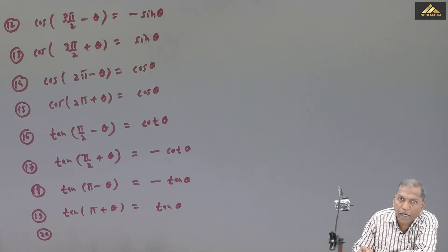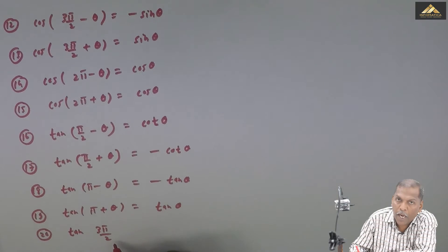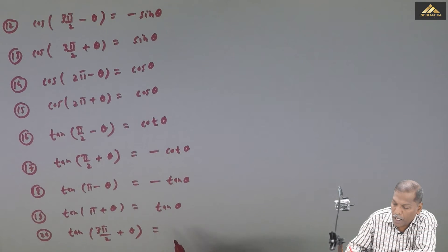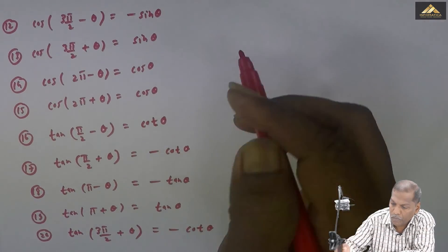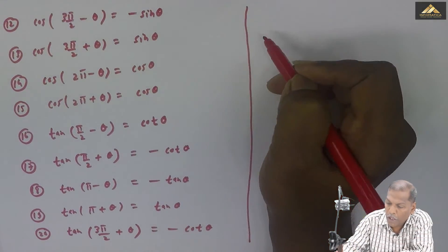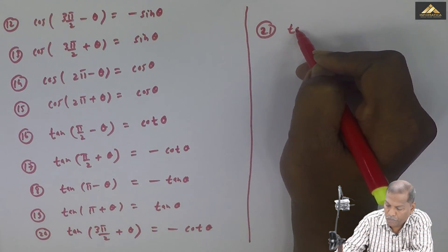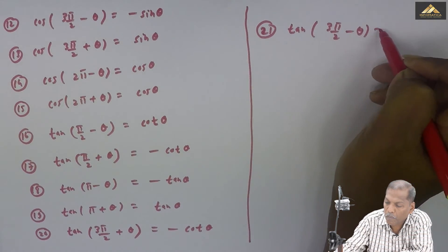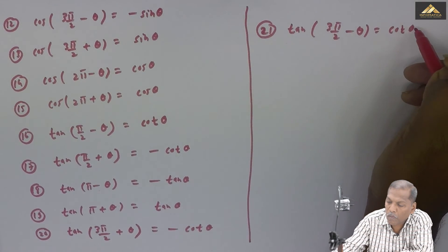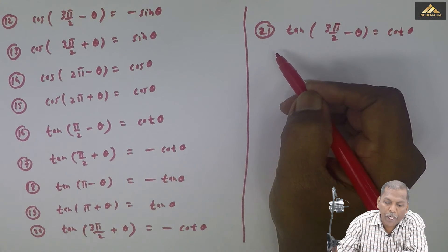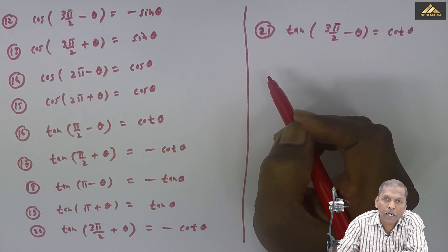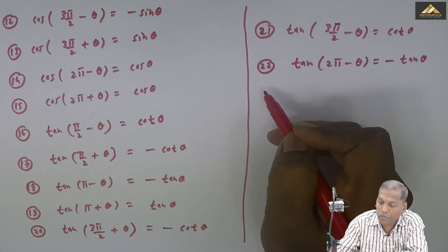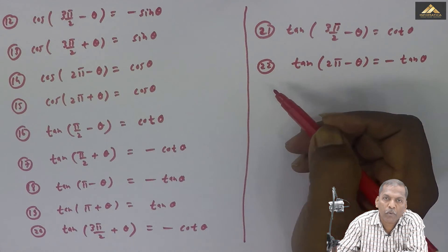Formula number 9: tan of pi plus theta. Formula number 22: tan of 2 pi minus theta is equal to minus tan theta. And the last formula, number 23: tan of 2 pi plus theta is equal to tan theta.